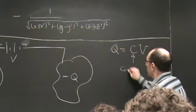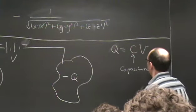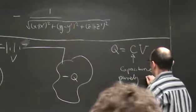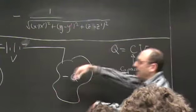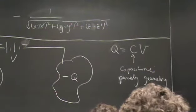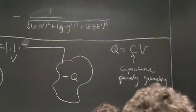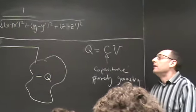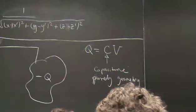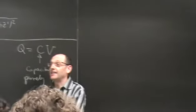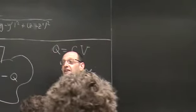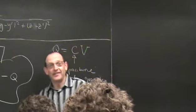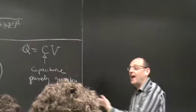The capacitance is defined such that the charge Q equals C times V, and the capacitance is purely geometric — assuming vacuum between them and perfect conductors. So the capacitance is a property of the geometry of the conductors alone. To calculate capacitance, you can solve Laplace's equation given the boundary conditions, find the potential, then use the normal derivative to get the surface charge density. But we rarely actually do that.